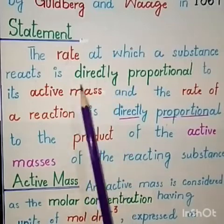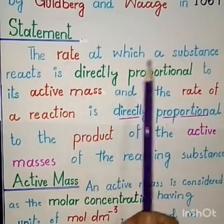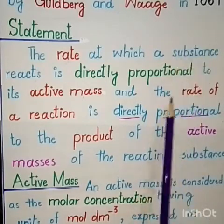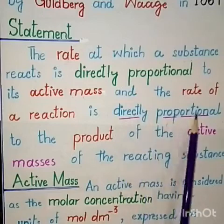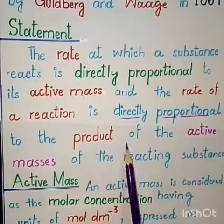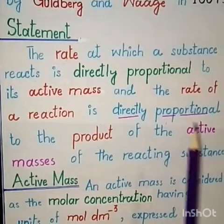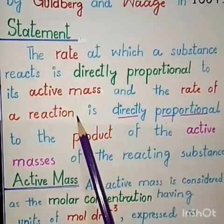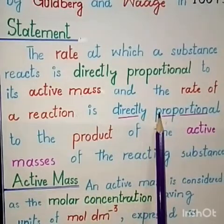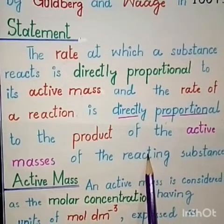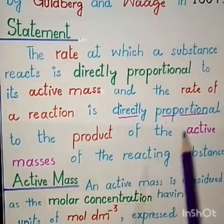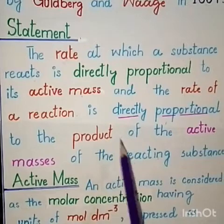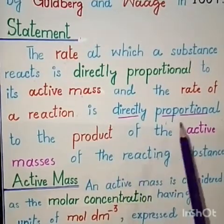The rate of reaction is directly proportional to the product of the active masses of the reacting substances. When we talk about the rate of reaction, the speed of reaction is directly proportional to the active masses of the reactants multiplied together.